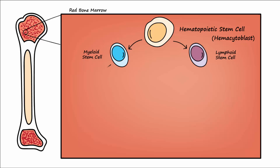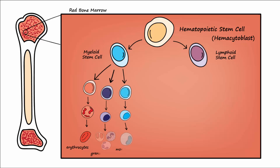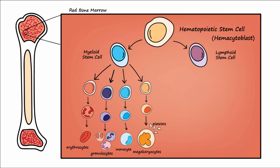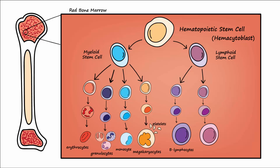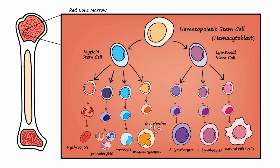A myeloid stem cell is the parent cell for erythrocytes, granulocytes, and agranulocytes like monocytes, and megakaryocytes, which platelets come from. The lymphoid stem cell is the parent cell for B lymphocytes and T lymphocytes, which are both important in adaptive immunity, and natural killer cells, which are part of innate immunity.